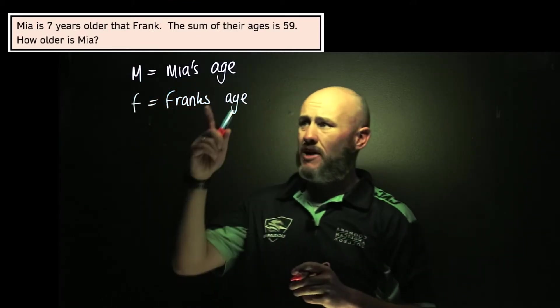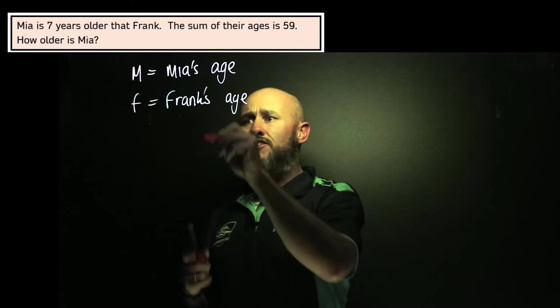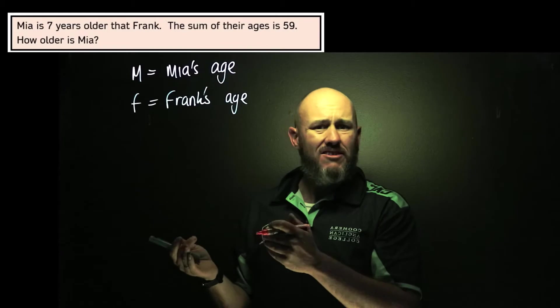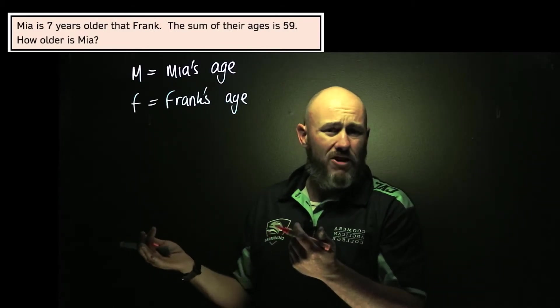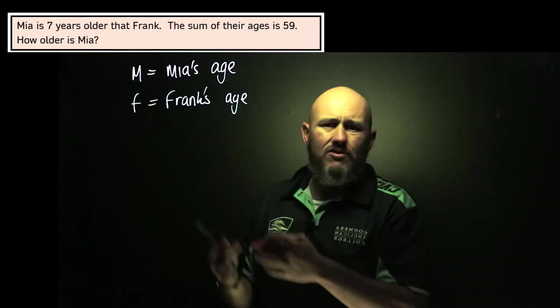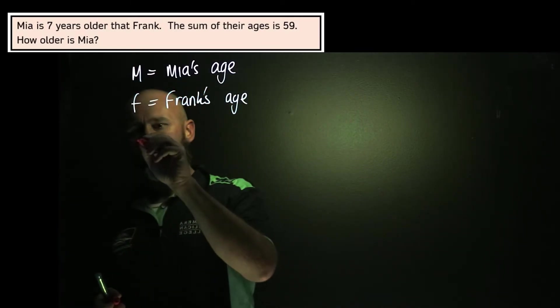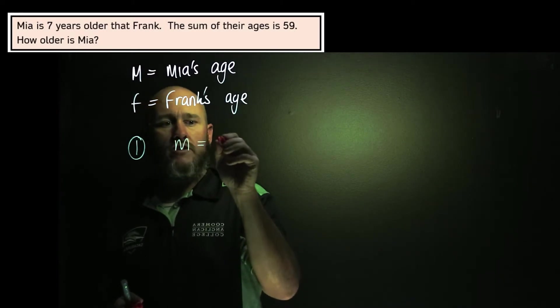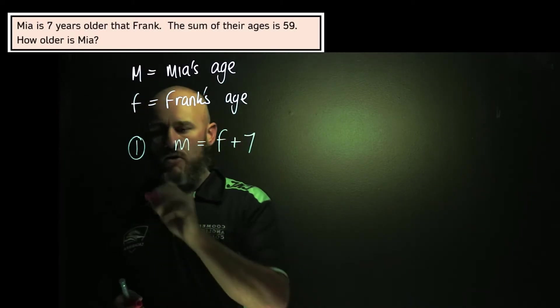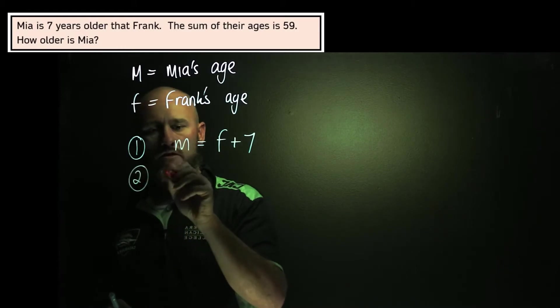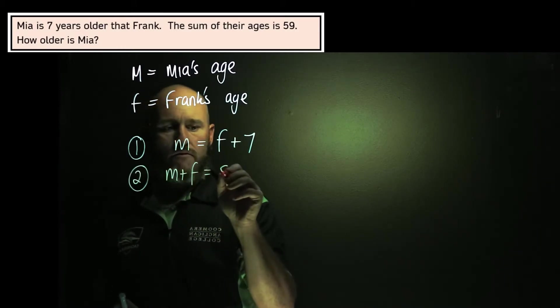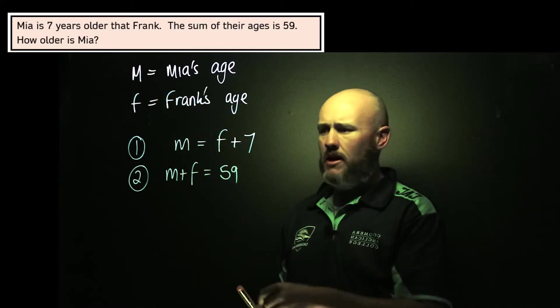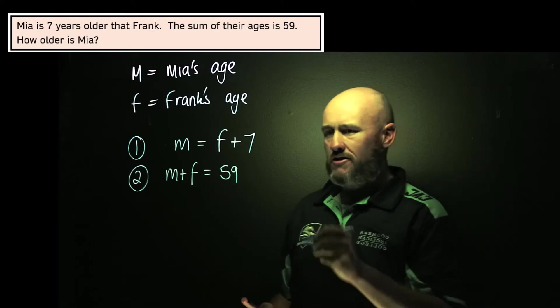Now I've got to be careful. I've got to say Mia's age and Frank's age. I can't just say Mia or Frank because I don't know whether that means Mia's height or Mia's age or the number of eggs Mia had for breakfast. So I've got to give some sort of context to it. Equation number one is that Mia is seven years older than Frank, and equation number two is that the sum of their ages is 59.